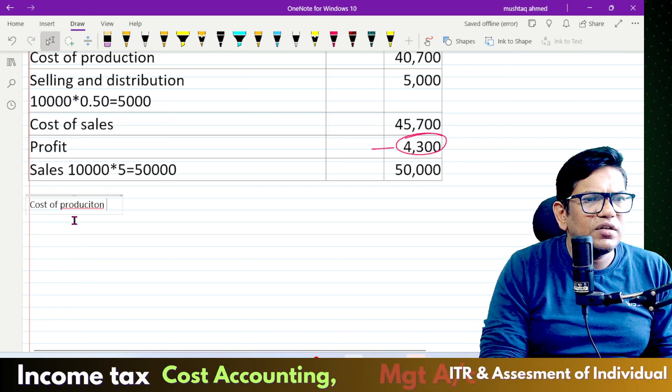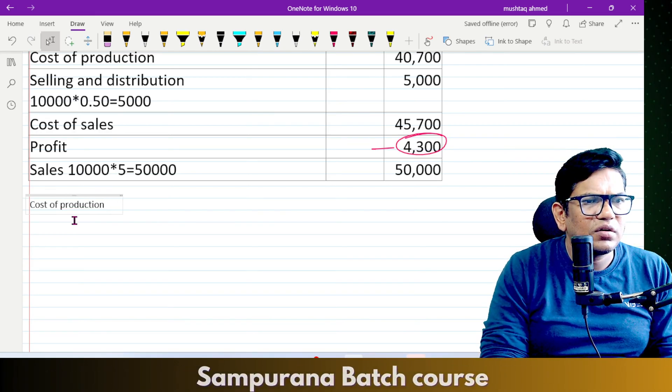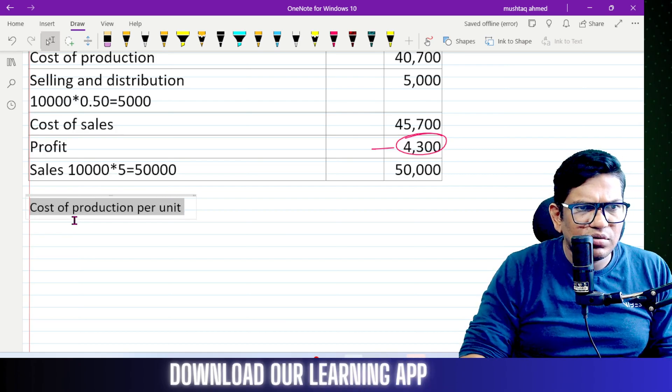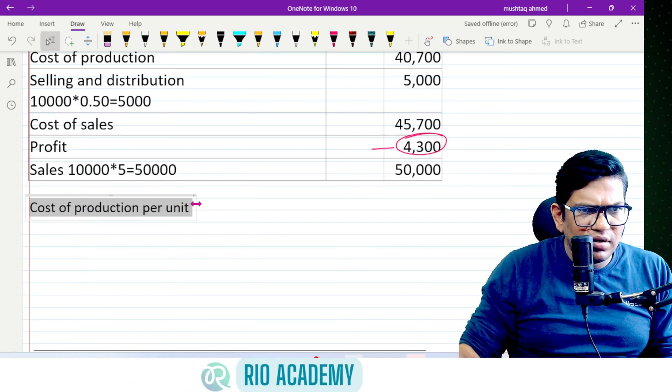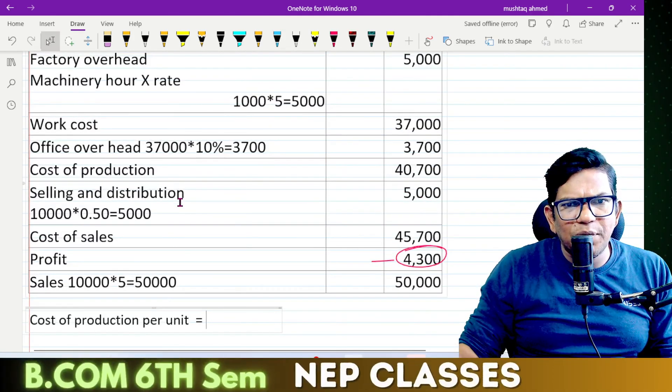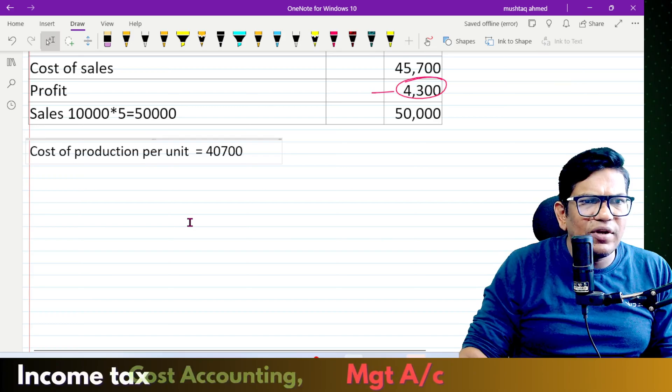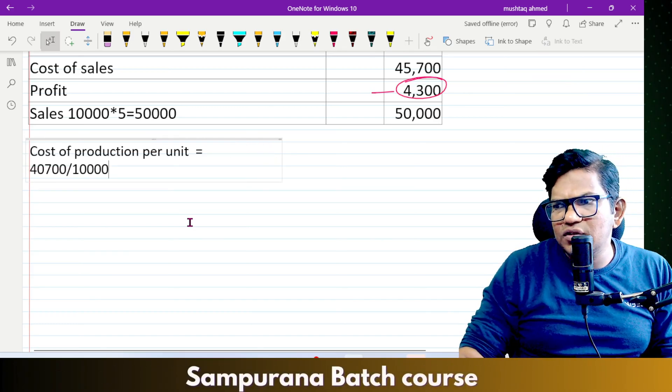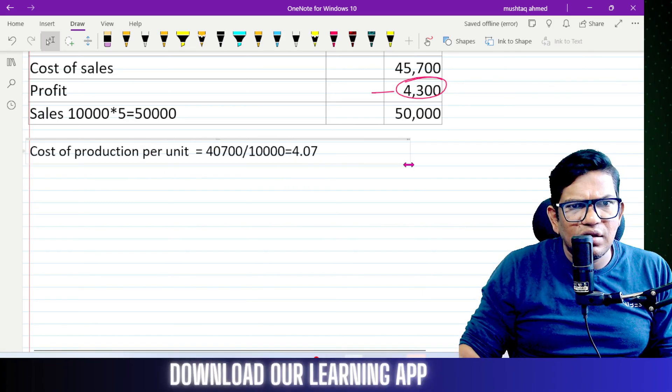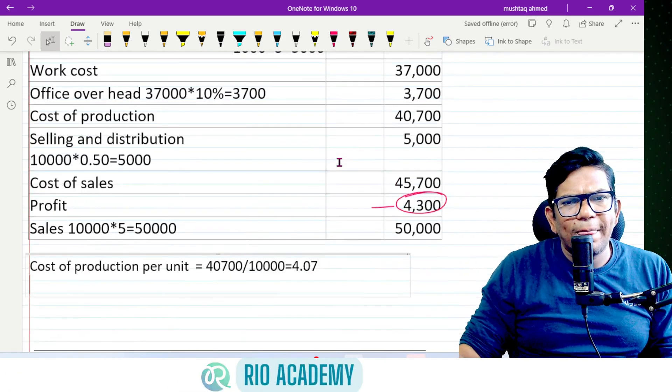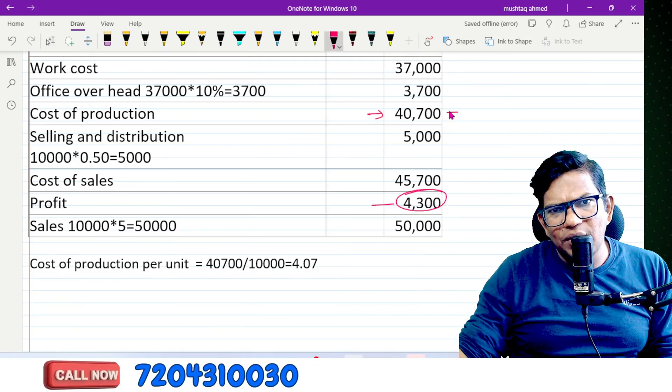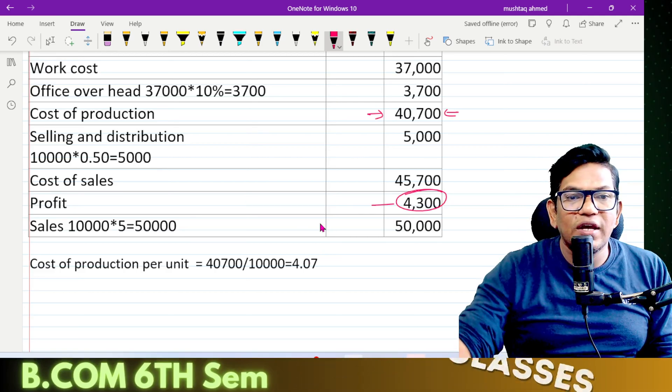Cost of production per unit: cost of production is 40,700 divided by 10,000. Total profit